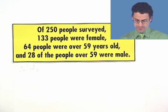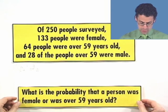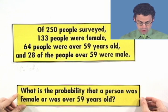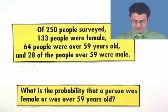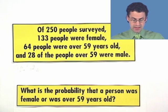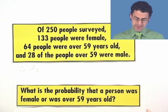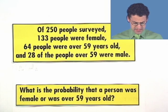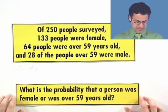Here's the question for us to think about. What is the probability that a person was female or was over 59 years old? Now, this is an inclusive probability, and one way to figure out the answer is to draw a little picture of the scenario. Pictures are always helpful if you can draw them.